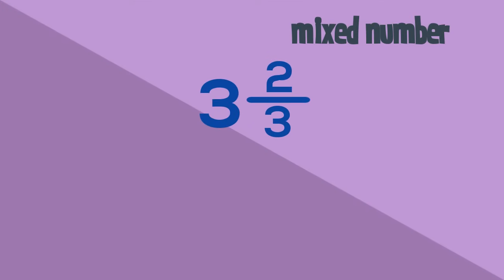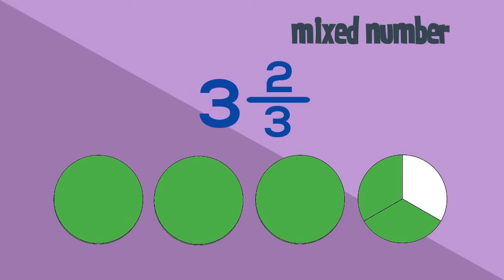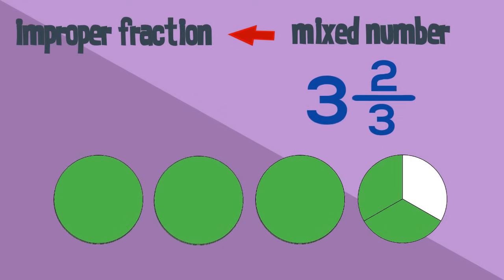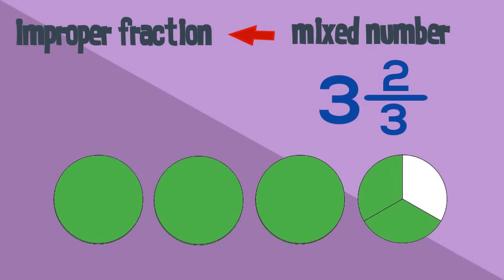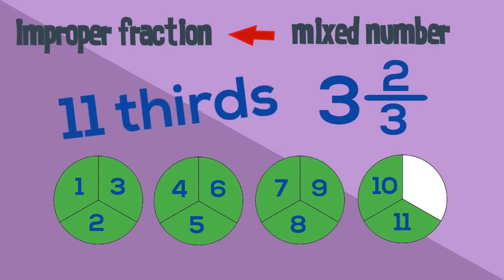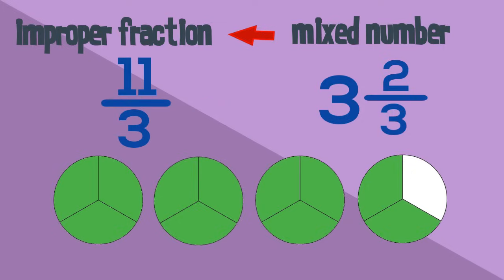Here we have a mixed number. It's telling us that we have three whole and two thirds. How can we express this as an improper fraction? We count how many thirds we have all together. We know that each whole has three thirds, so in total we have eleven thirds. Eleven thirds is the same as three and two thirds.